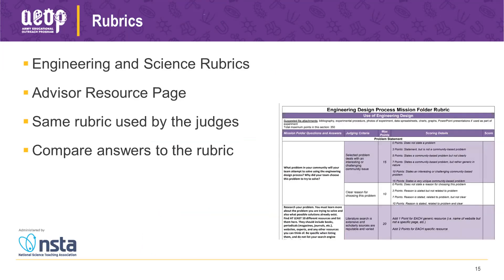One thing you can use — either when students are completely done or as they go along — are the rubrics. These rubrics are provided on the website and are the exact rubrics that judges will use when scoring the mission folders. It's a really valuable resource because students can see how they're doing and what the judges are going to look for in each question, and how many points each thing is worth.